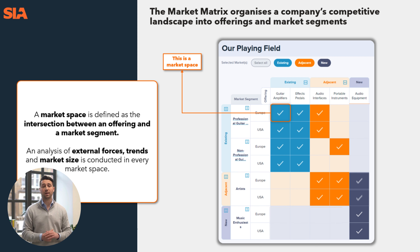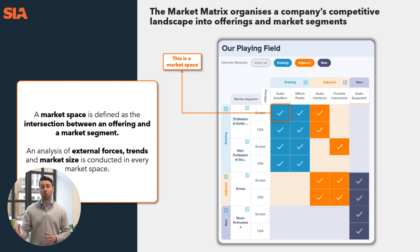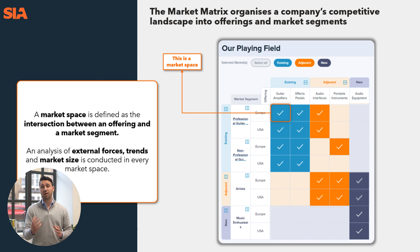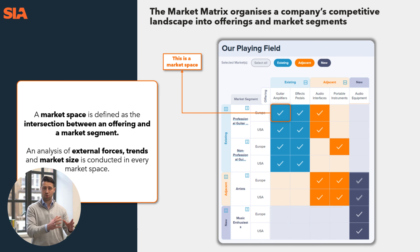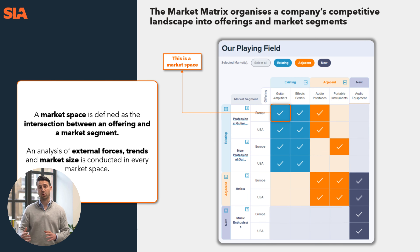Adjacent and new market segments are as follows. Adjacent market segments are close to who we serve today, but with some iteration and adaptation — for example, the same channel but in a different geography, or a channel that's close to who we serve today. Entirely new market segments are just that — entirely new. We don't serve those customers or those geographies today. That's the market matrix, the big picture. Now we're going to dig into a few specific strategies that organizations employ in order to maximize where they play today and where they could play.